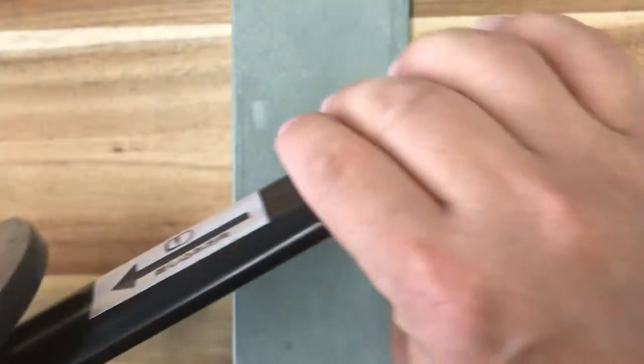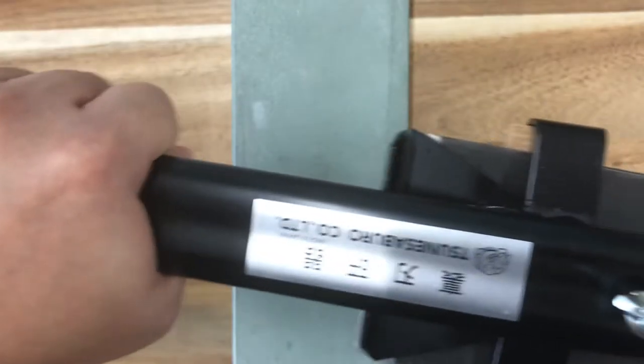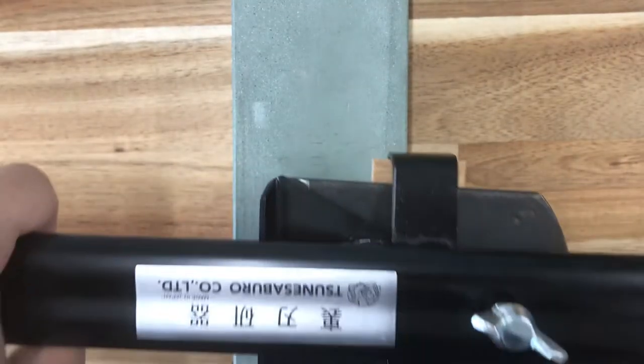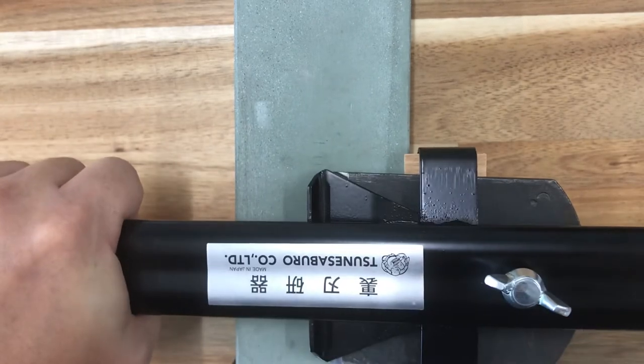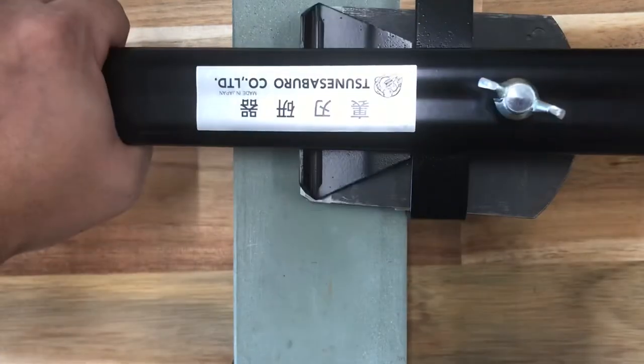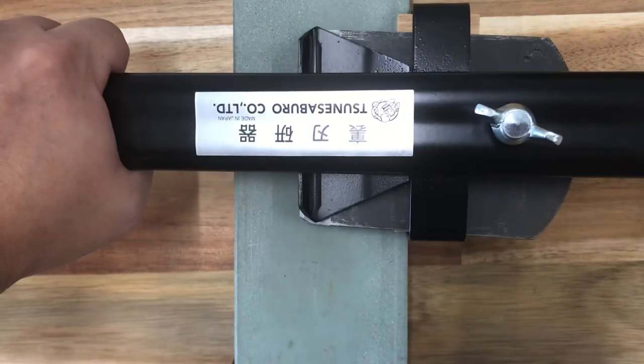Then hold the bars and put the back edge on the waterstone, pressing strongly against it, and slide to sharpen the back edge.